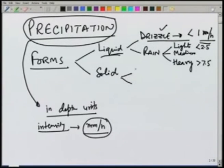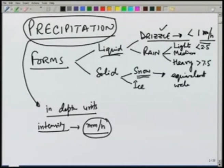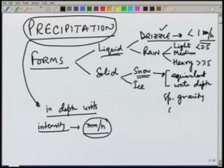In the solid form, we can have precipitation in the form of snow or ice. Depending on the atmospheric conditions at the place where the clouds are formed and the place at which they are falling, we can have various combinations. Snow has a density which is quite small. When we measure the precipitation in terms of snow, we typically express it in equivalent water depth. The specific gravity of snow is typically about 0.06 to 0.15, and generally a value of 0.1 is taken.